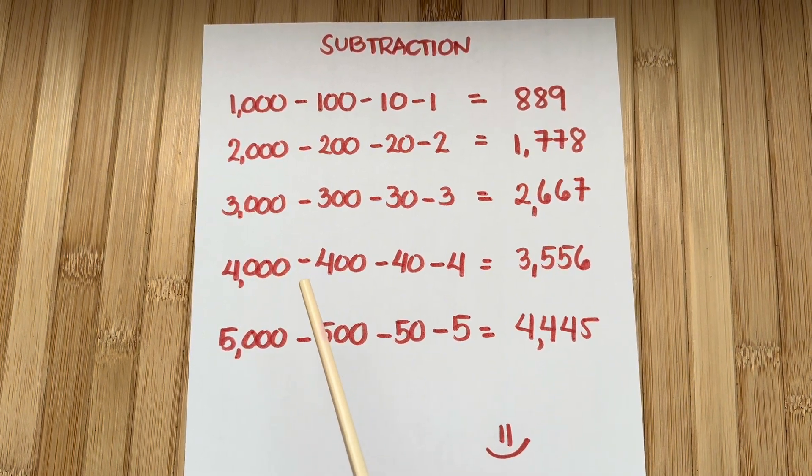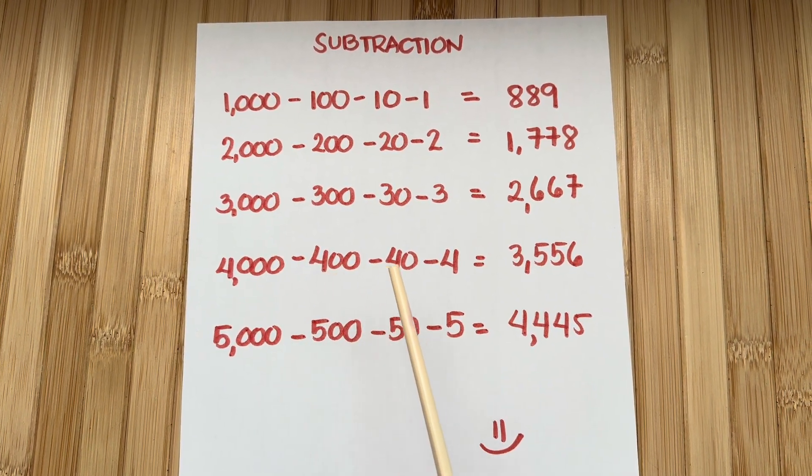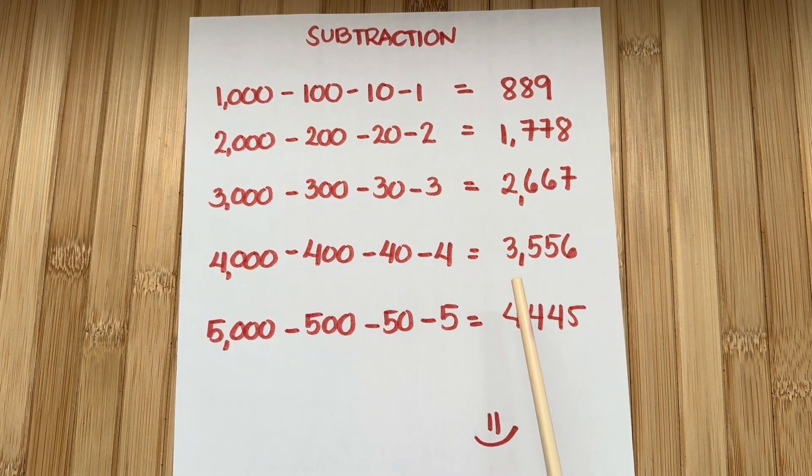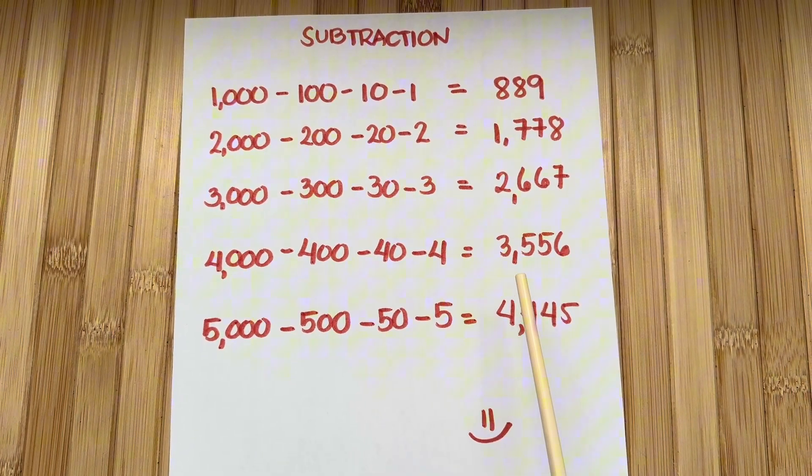Next, 4,000 minus 400 minus 40 minus 4 equals 3,556.